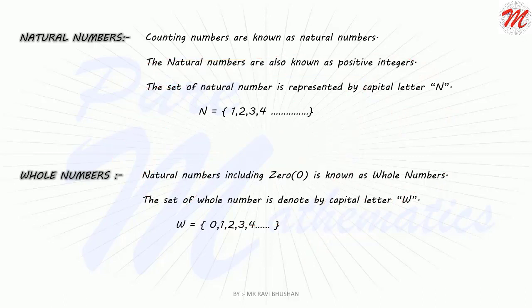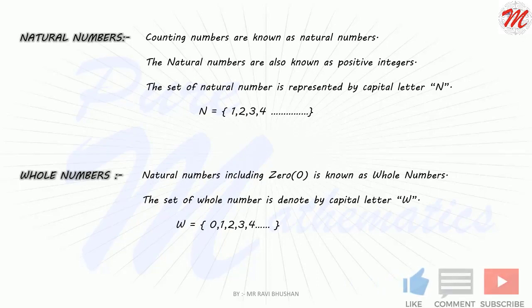What is a whole number? A set comprising all the natural numbers and zero will be termed as whole numbers. The set of whole numbers is represented by a capital letter.